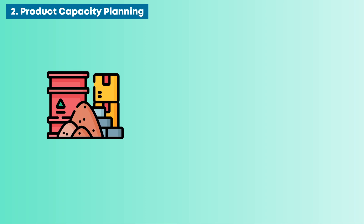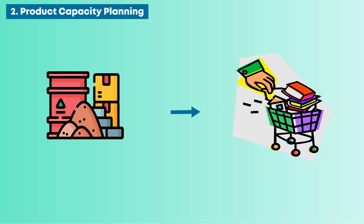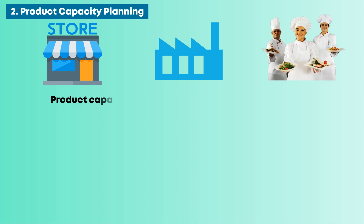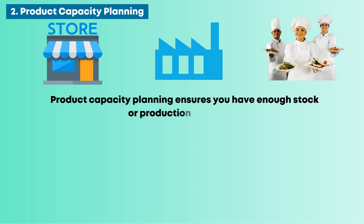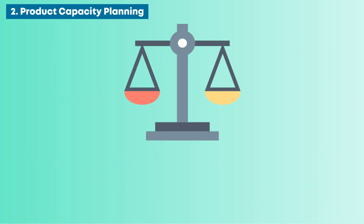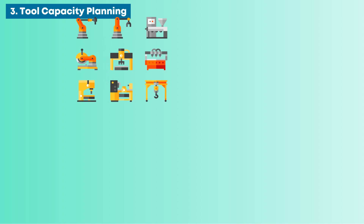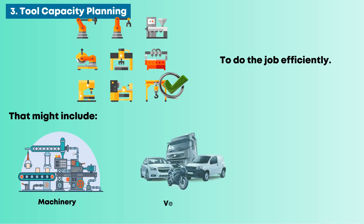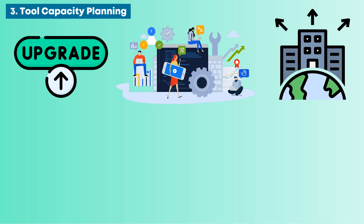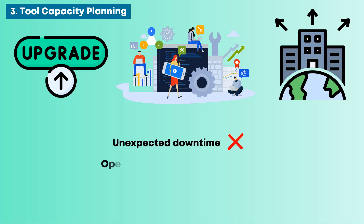Product capacity planning focuses on the physical items or resources needed to fulfill customer demand. Whether you're running a retail store, a factory, or a catering service, it ensures you have enough stock or production resources — not too much that it leads to waste, and not too little that it causes delays. Tool capacity planning ensures your business has the right tools and equipment in place to do the job efficiently. That might include machinery, vehicles, software, or computers, depending on your industry. Planning for upgrades, maintenance, or expansion helps avoid unexpected downtime and keeps operations running smoothly.